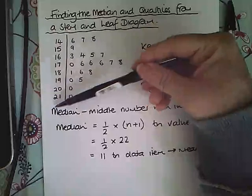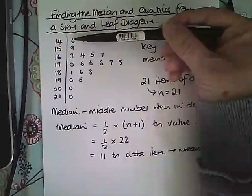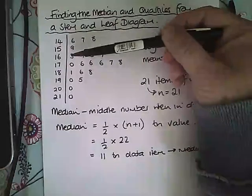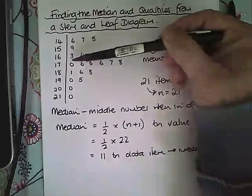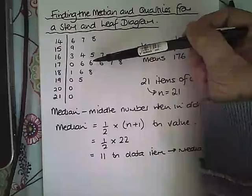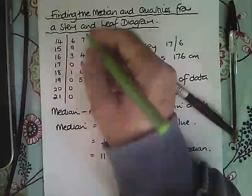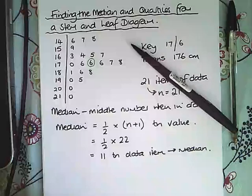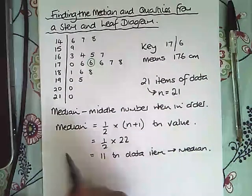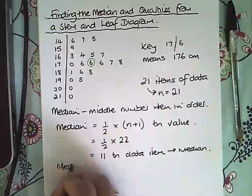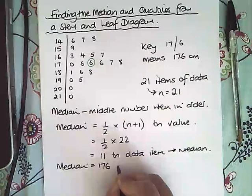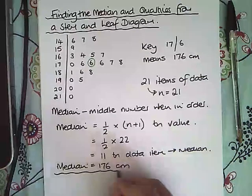Remember we don't include these ones because these are the stems, so it's just these numbers. So we're looking for the 11th number: 1, 2, 3, 4, 5, 6, 7, 8, 9, 10, 11. It's this value here, let me just circle that in green. So that corresponds to 176, so the median is equal to 176 centimeters, that is the middle value.